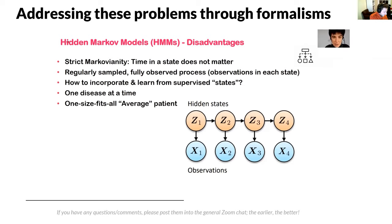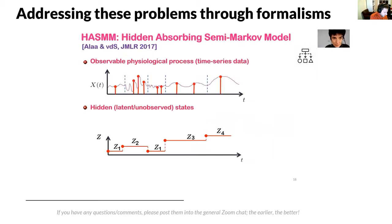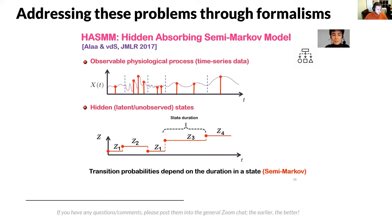Finally, these models are one-size-fits-all — the transition probabilities are the same across the population, ignoring individualized clinical trajectories. To cope with these limitations, a few years back we developed a comprehensive model called the hidden absorbing semi-Markov model. This model is able to learn from observable physiological processes to learn hidden states like in an HMM, but unlike an HMM, it considers not only the current state of the patient, but also the duration the patient has been in a particular state. By considering the state duration, this model is no longer a standard Markov model but rather a semi-Markov model.